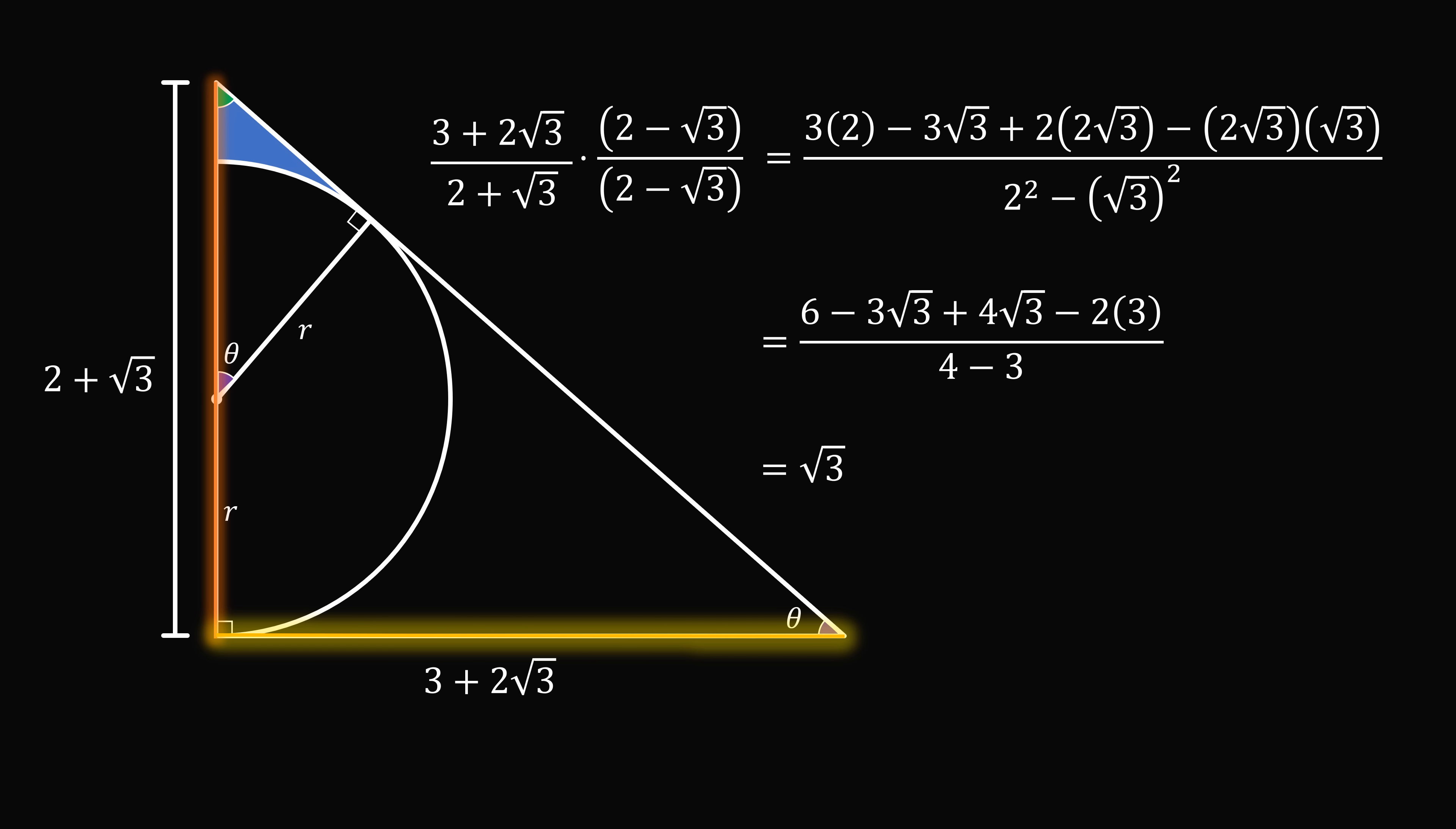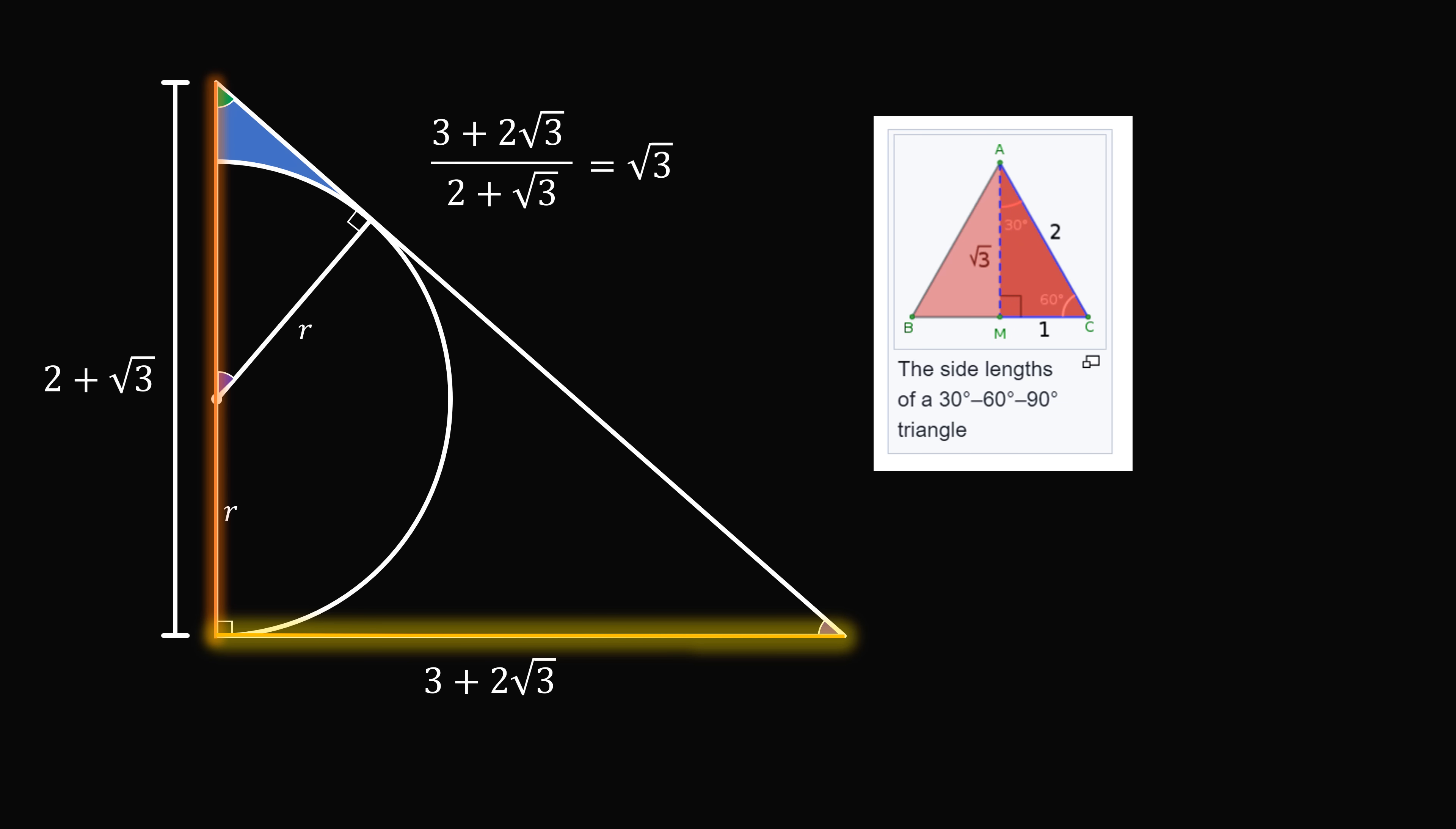So what does this mean? The ratio of the longer leg to the shorter leg of this right triangle is equal to root 3, and that's precisely the ratio of a special 30-60-90 right triangle. The longer leg is opposite the 60-degree angle, and the shorter leg is opposite the 30-degree angle. 2 plus root 3 is the shorter leg, and so the angle it is opposite is equal to 30 degrees. So theta is equal to 30 degrees. That's this angle here, and it's also this purple angle over here.